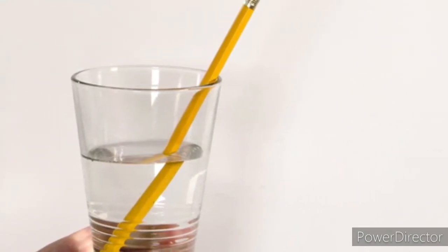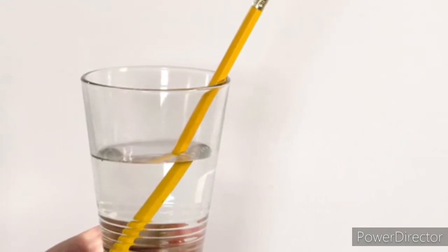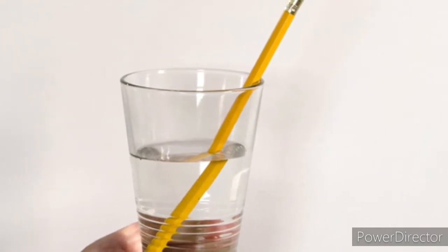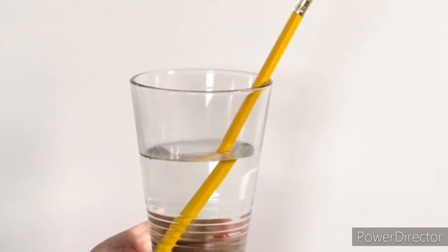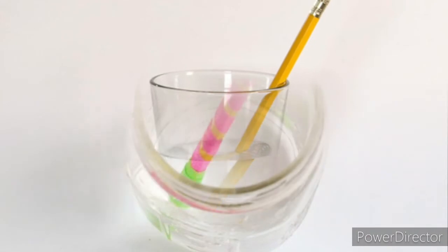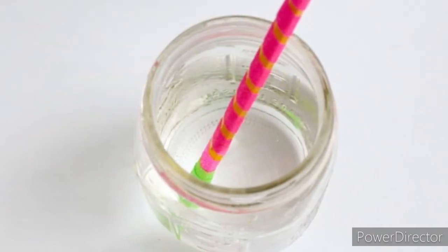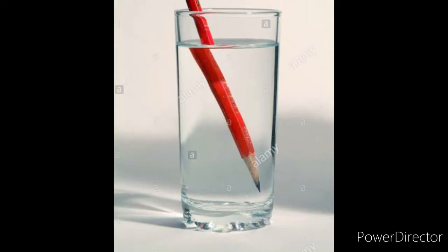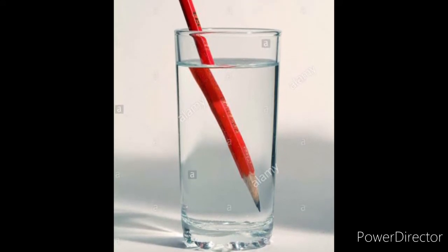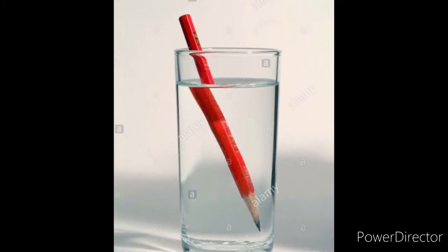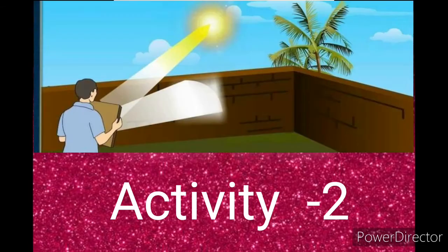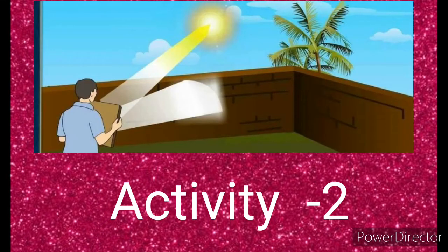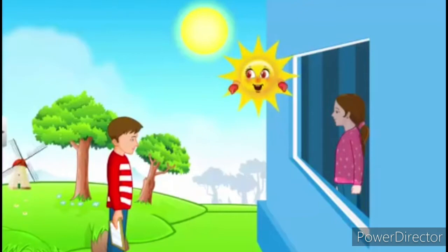When you see the pencil from the side of the glass, we observe that it is displaced at the interface of air and water because of a phenomenon of light called refraction. When you see the pencil from the top of the glass, it appears thick and bent at the interface of air and water due to refraction.